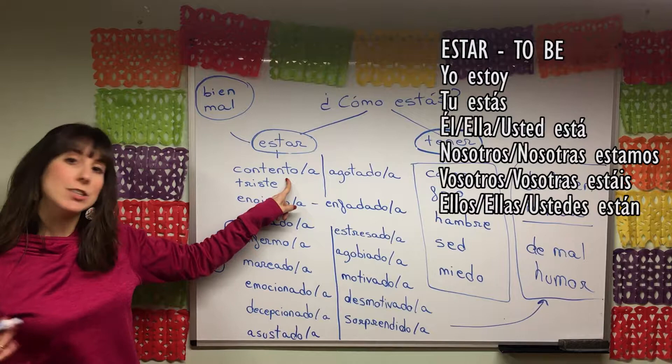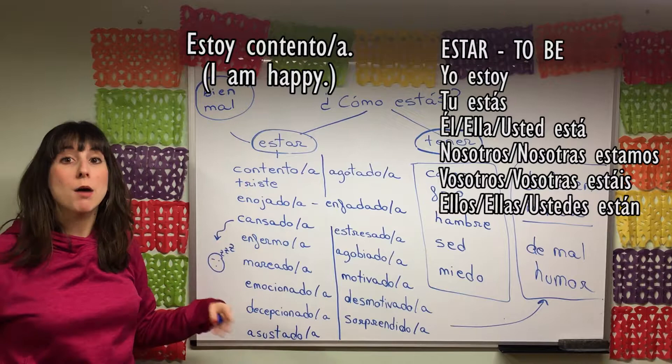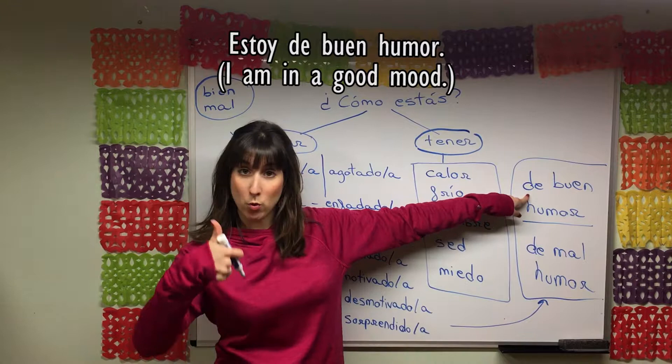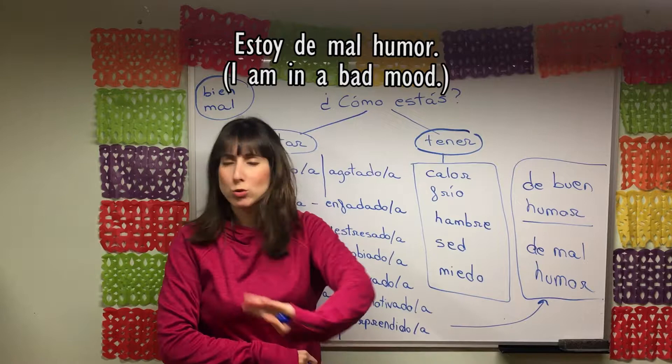We could also say estoy contenta — I'm happy. If we want to say I'm in a good mood or I'm in a bad mood, we could say estoy de buen humor — I'm in a good mood, or estoy de mal humor — I'm in a bad mood.